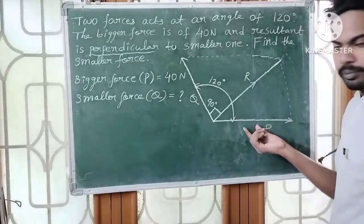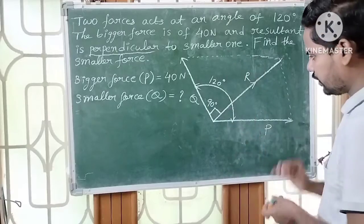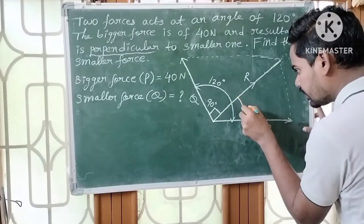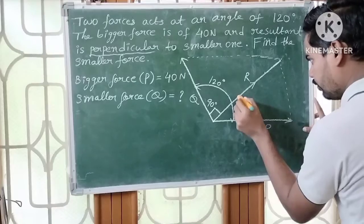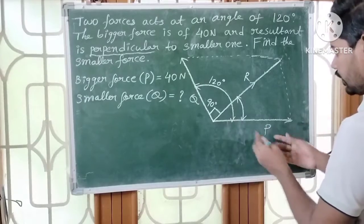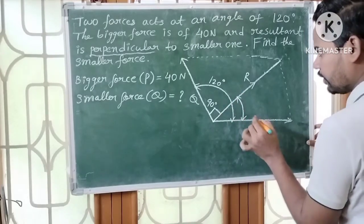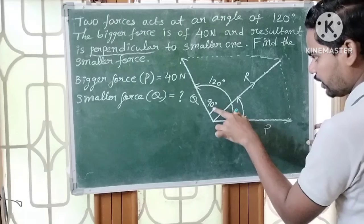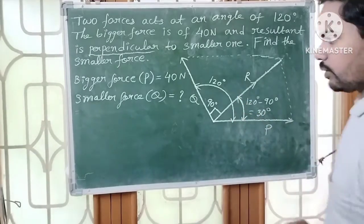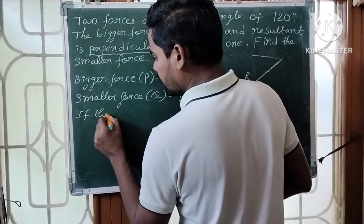The angle between the resultant and the smaller force is 90 degrees. Now, considering the bigger force as the horizontal force, the angle between the bigger force and the resultant is 120 minus 90 degrees, which gives 30 degrees. So this angle alpha is 30 degrees.